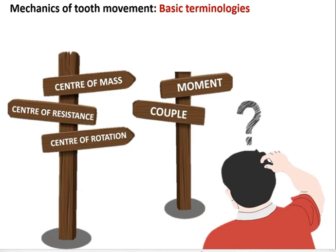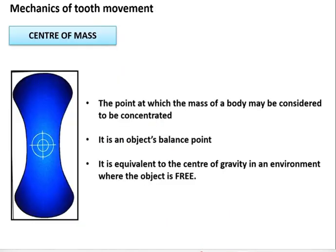To understand biomechanics, you need to be familiar with these terminologies: center of mass, center of resistance, center of rotation, moment, and couple. Center of mass is the point at which the mass of a body is concentrated — it is equivalent to the center of gravity in a free environment. If you want to balance an object freely in space, you must find where its mass is concentrated.